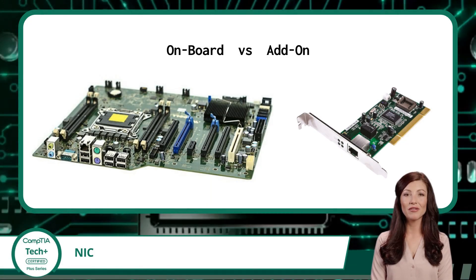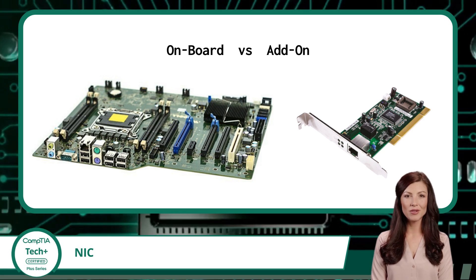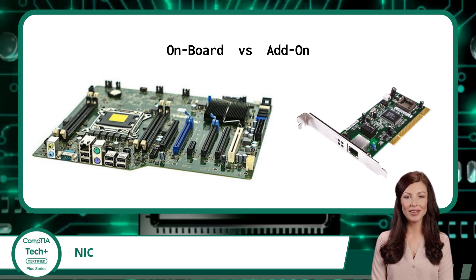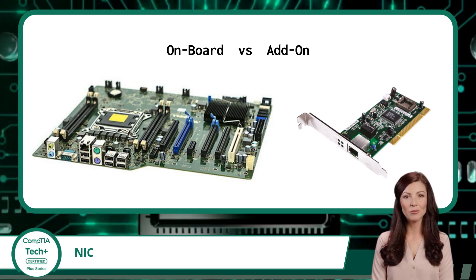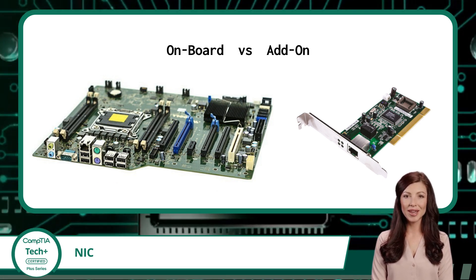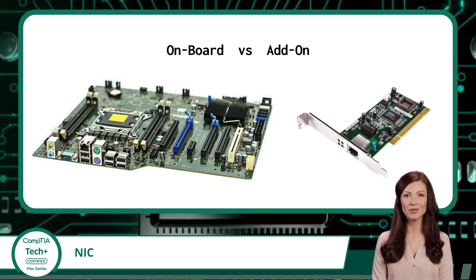You can also classify NICs into two more groups. They can be integrated into the motherboard of a computer — we refer to these as onboard NICs — or they can be added as a separate expansion card or add-on card. An integrated NIC is built directly into the motherboard and does not require any additional installation. This may seem like a benefit, but it does pose some restrictions as we lose the ability to upgrade in the future. Add-on NICs, however, can be easily replaced or upgraded. If you want to change or upgrade your network connection, you can simply remove the existing add-on NIC and install a new one.